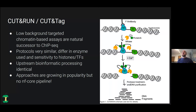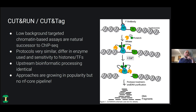You can then remove everything and sequence the products, getting a very accurate position down to the nucleosome level where the TF or histone was. The difference between CUT&RUN and CUT&TAG is that CUT&RUN uses MNase as the enzyme and uses calcium, while CUT&TAG uses transposase and magnesium as the activating ion. There's some evidence that CUT&TAG is better for transcription factors, but the key point is that the bioinformatic processing upstream is exactly the same for both protocols — so this pipeline covers both.